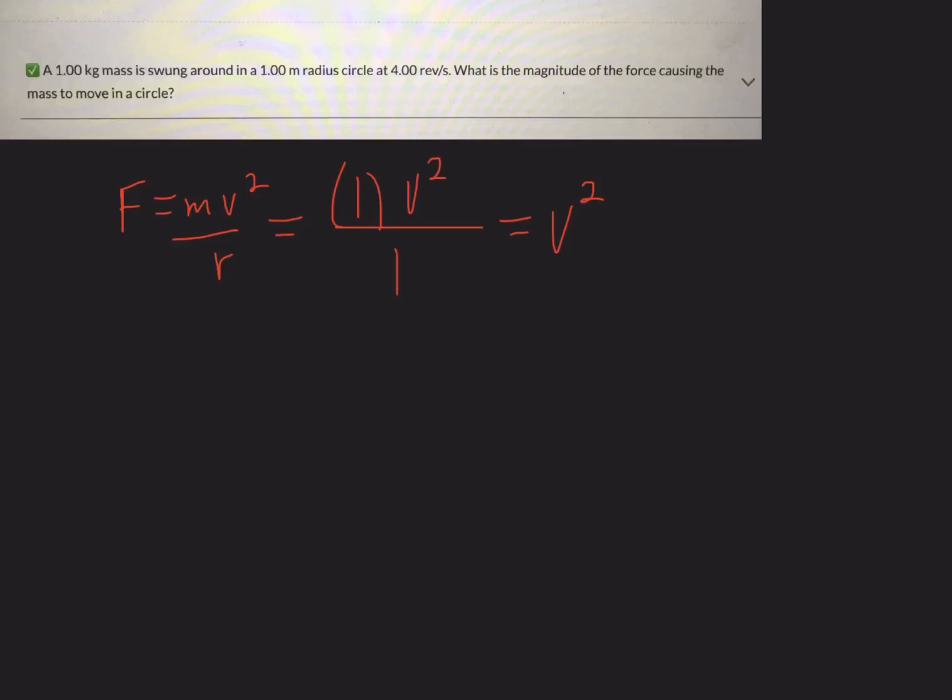Now the velocity is given in four revolutions per second. This needs to be in meters per second before we put it in and square it. So one revolution around is two times pi times the radius, but the radius, remember, was one. So our answer would be eight pi meters per second.